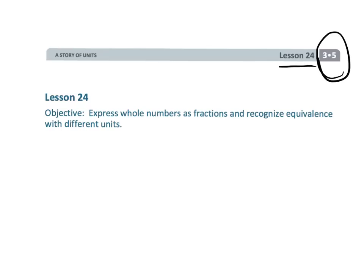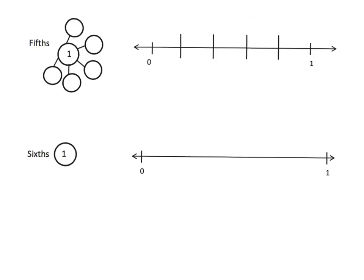This is Grade 3, Module 5, Lesson 24. In this lesson, students are going to learn what kinds of fractions equal whole numbers. On this problem we're given the whole number one, and we want to create a number bond of unit fractions of fifths. We would put one-fifth, one-fifth, one-fifth, one-fifth, one-fifth.